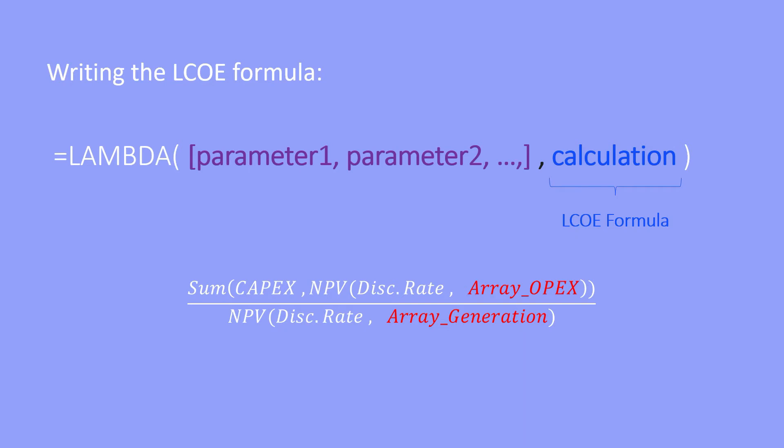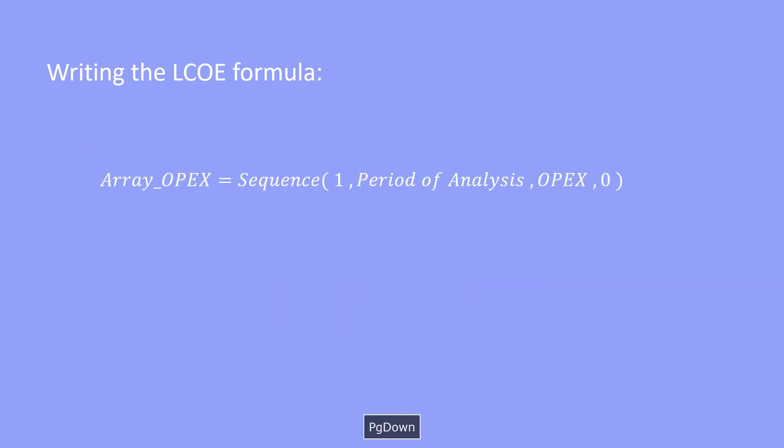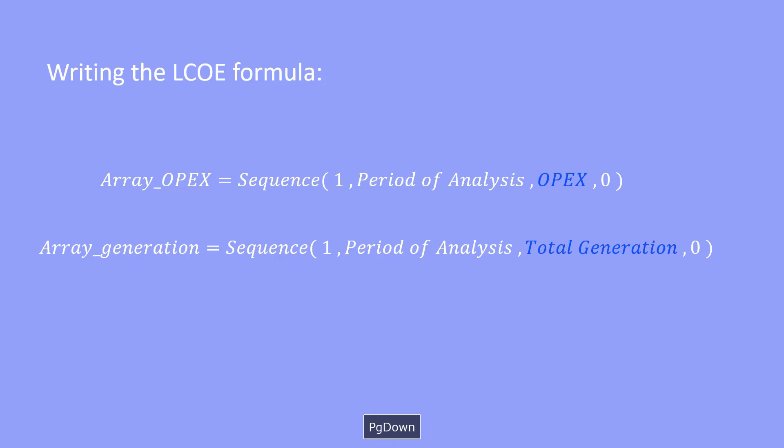For the LCOE calculation, we need two arrays: one for the NPV of the OPEX and one for the NPV of generation. To create an array for the OPEX, the formula is: array OPEX equals SEQUENCE(1, OPEX, OPEX, 0). And to create an array for the generation: array generation equals SEQUENCE(1, period of analysis, total generation, 0). The only difference between the two arrays is the argument OPEX or total generation.